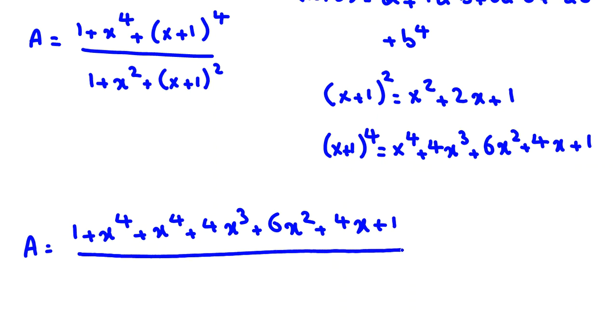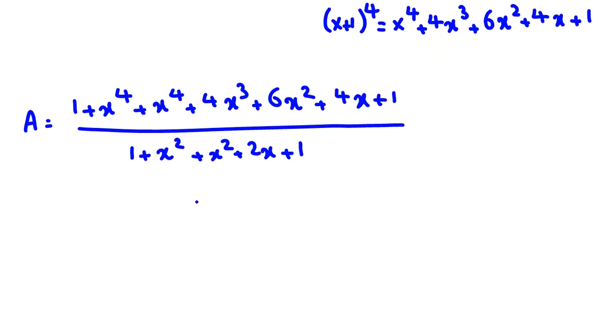And let's calculate the denominator. The denominator will be 1 plus x squared, and x plus 1 squared we've calculated is x squared plus 2x plus 1. Now we can see the numerator if we sort from highest degree: 2x to the 4, x cubed is 4x cubed, 6x squared plus 4x plus 1 plus 1 which will be plus 2.